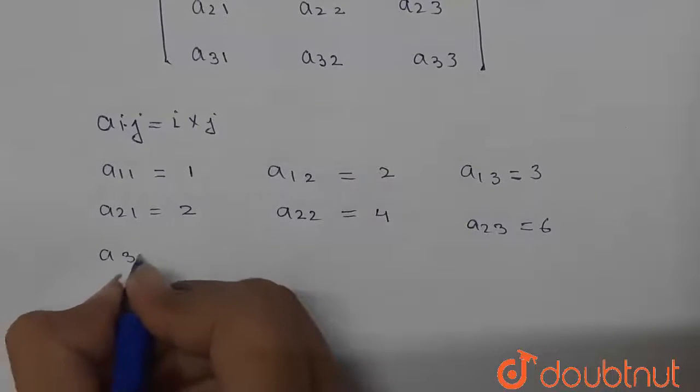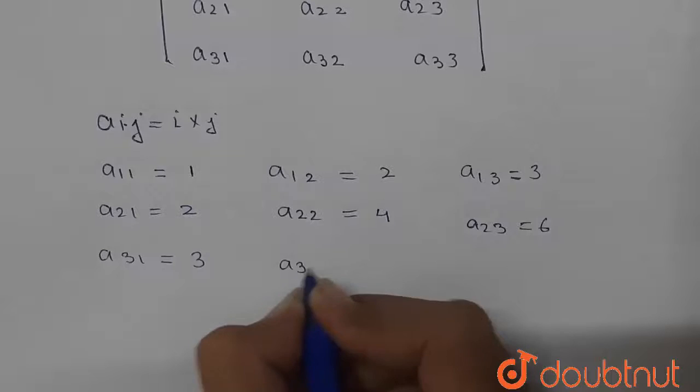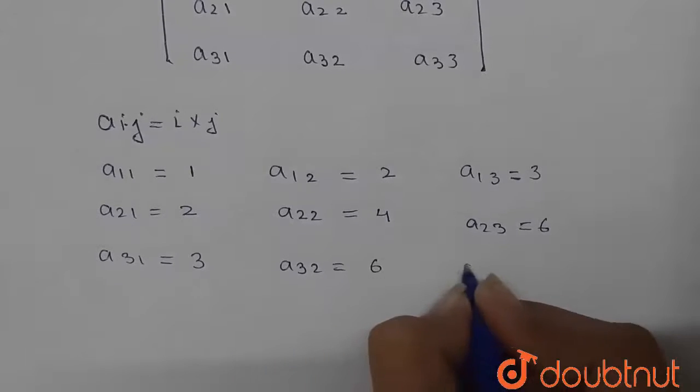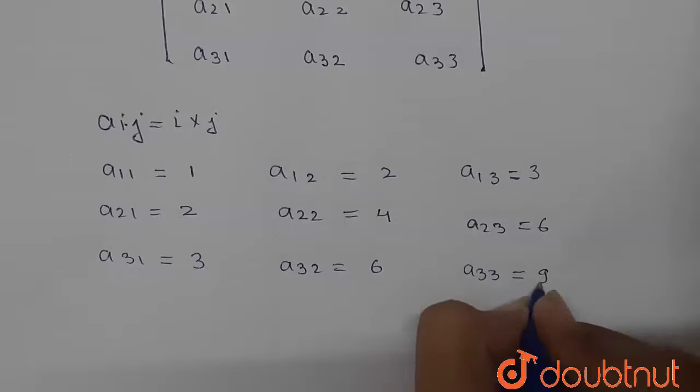Similarly, a31 will be 3 times 1, that is 3. And a32 will be equal to 6. And a33 will be equal to 3 times 3, that is equal to 9.